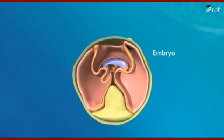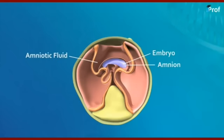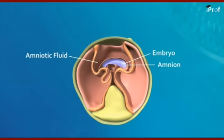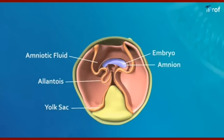Looking at a diagram of the embryo: the outer layer is the amnion, which secretes the amniotic fluid. This fluid provides a natural swimming pool and protection to the embryo. The yolk sac is the first hemopoietic organ. The allantois is related to excretion.